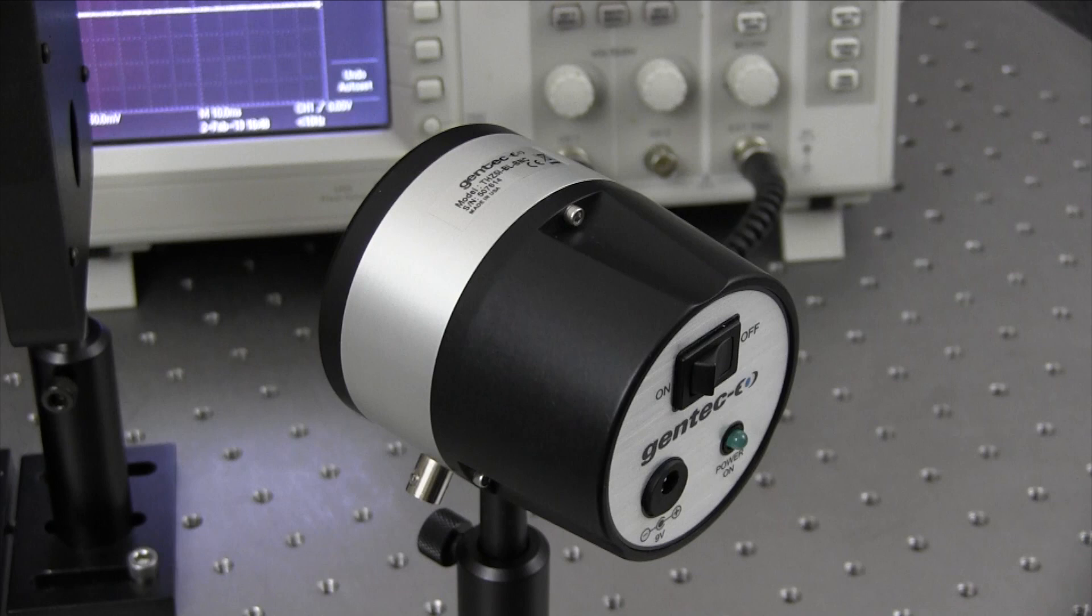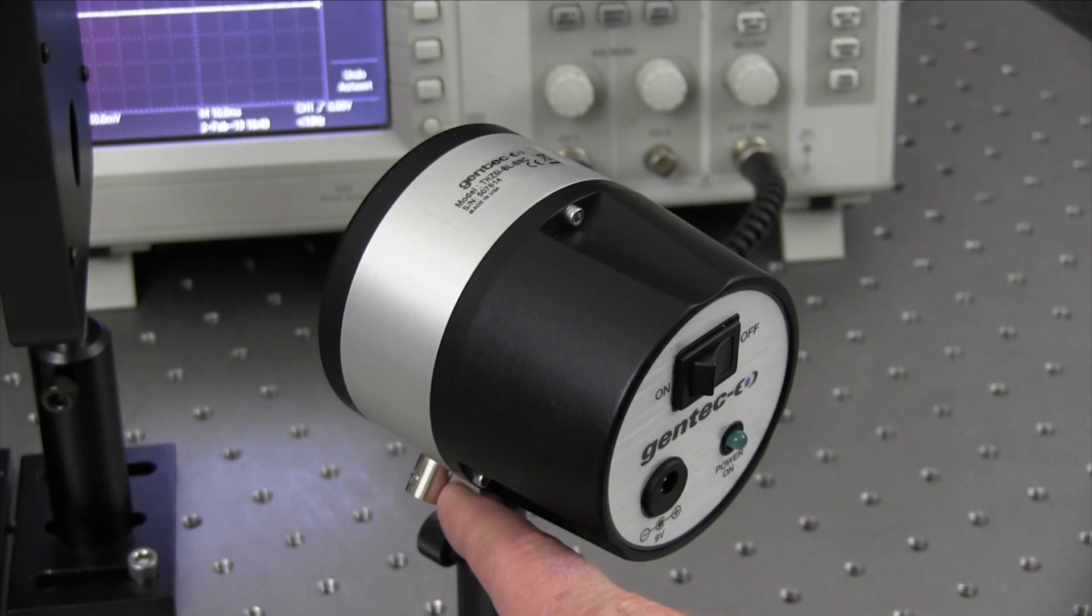On the back you see an on-off power switch, green power on lamp, and AC power jack. On the bottom of the probe you'll find a BNC connector that provides the analog voltage output.